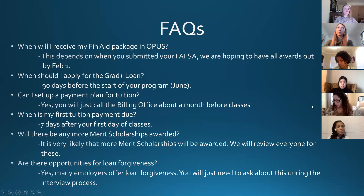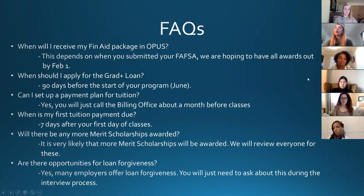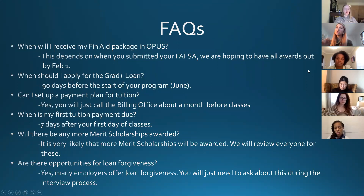Now I'll run through frequently asked questions. When will I receive my financial aid package in OPUS? Depending on when you applied, some of you may already have it. We're hoping to have all packages out by February 1st — sometimes there are system glitches since we're beholden to the federal government, but fingers crossed. When should I apply for the Graduate PLUS loan? As mentioned, 90 days before the program starts is when that application opens — set a Google Calendar reminder for June.